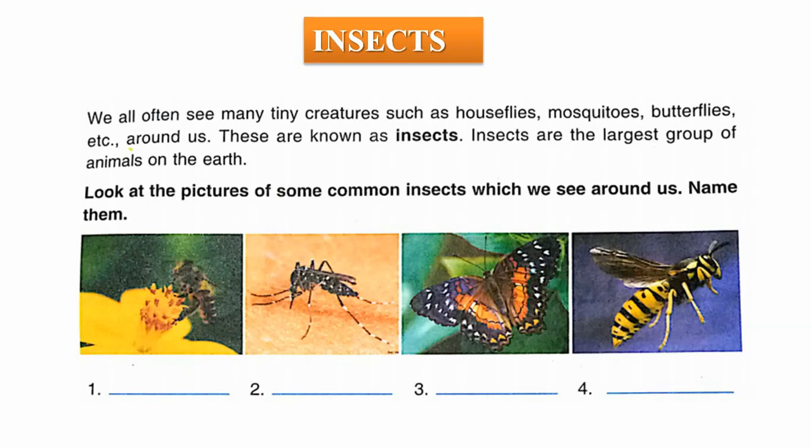Children, here you can see pictures of a few insects that you can see commonly everywhere. You have to identify and name them — the first one, second one, third one, and fourth one. These are a few insects which you can see in your everyday life; you have to identify and write their names.